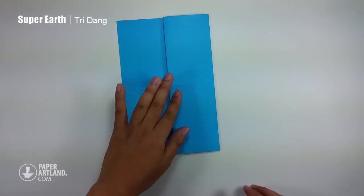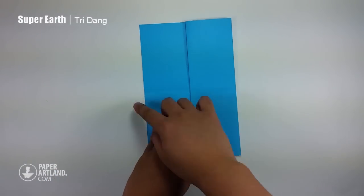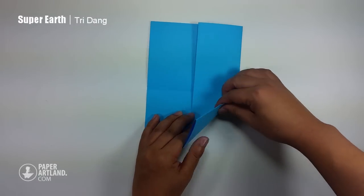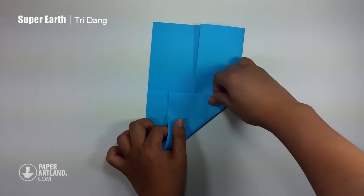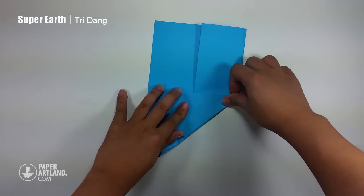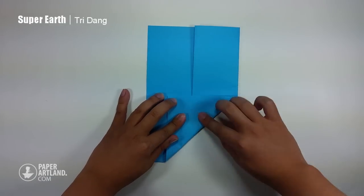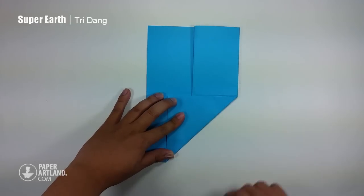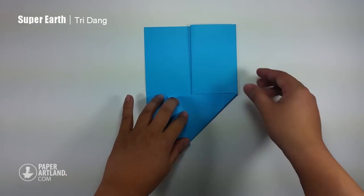And next step, I start from this edge again, fold down to the center crease. And repeat the same fold for the opposite side.